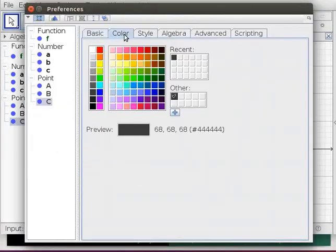After double-clicking on point c in graphics view, select object properties. From color tab, change the color to red. Close the preferences dialog box.